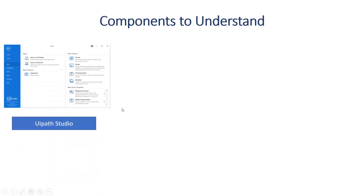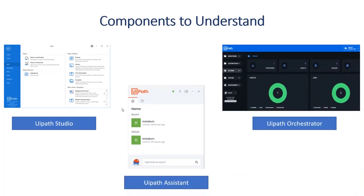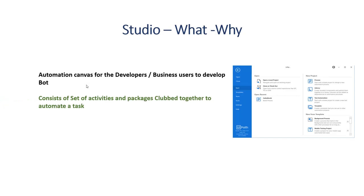As a beginner, there are three components you need to know: UiPath Studio, UiPath Assistant, and UiPath Orchestrator. UiPath Studio is an automation canvas — an IDE provided by UiPath — used to develop bots. It consists of a set of activities and packages that are clubbed together to automate tasks, including recording, Citrix automation, Excel activities, email activities, and more. It is also used to develop, debug, and publish your code to the Orchestrator.